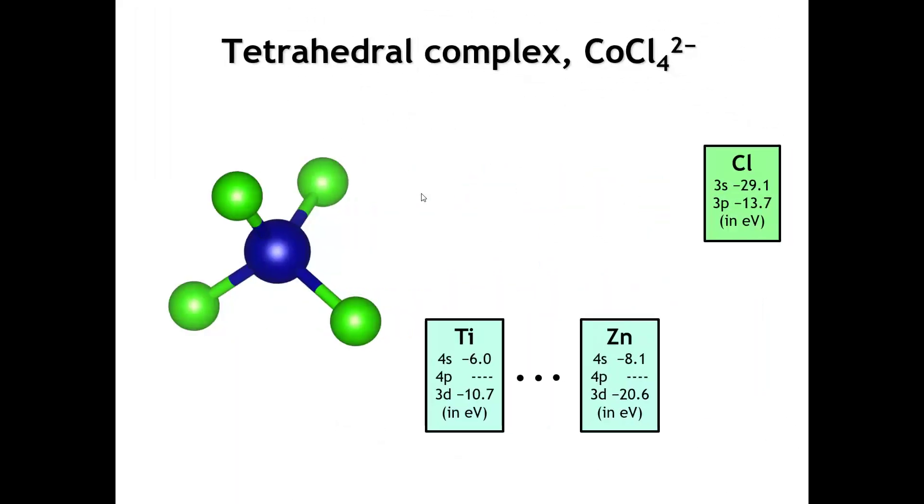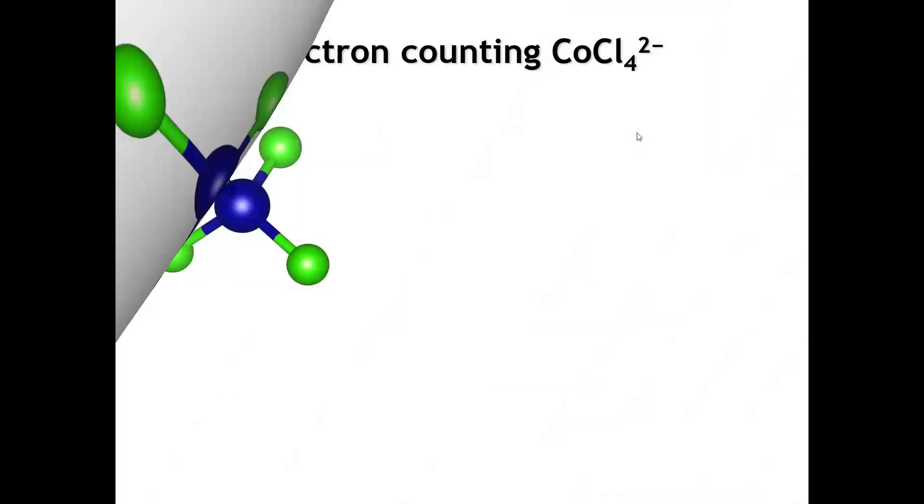What happens if we change the geometry to a tetrahedron but keep a transition metal in the center? As an example of this, let's consider the complex ion tetrachlorocobalt 2-. Once again, we can focus just on the 3p orbitals of the chlorine. Now we have only 4 chlorines in the molecule, so we have 12 3p orbitals on chlorine that we have to consider. And we have the same 9 orbitals on the central transition metal, cobalt.